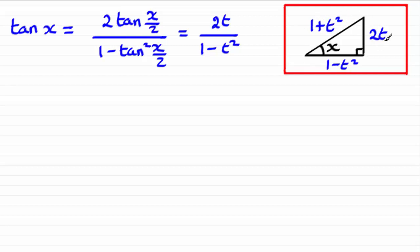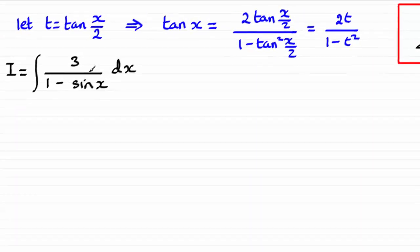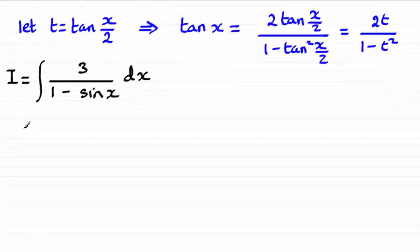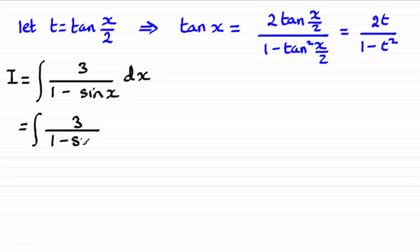I'd suggest that you learn this triangle — it is really useful when working with trigonometric functions like sin x, cos x, cot x, etc. So let's start with the integral. We have the integral of 3 all over (1 minus sin x). We can look at dx as being dx/dt multiplied by dt; it's as if those dt's cancel, just leaving us with dx.